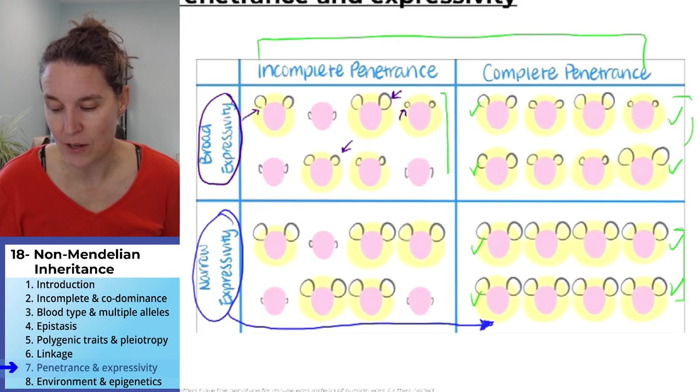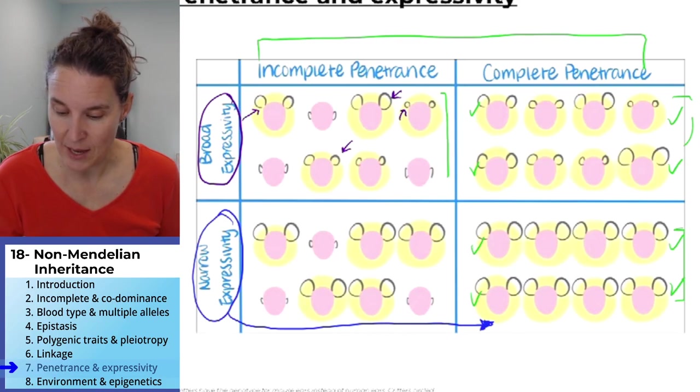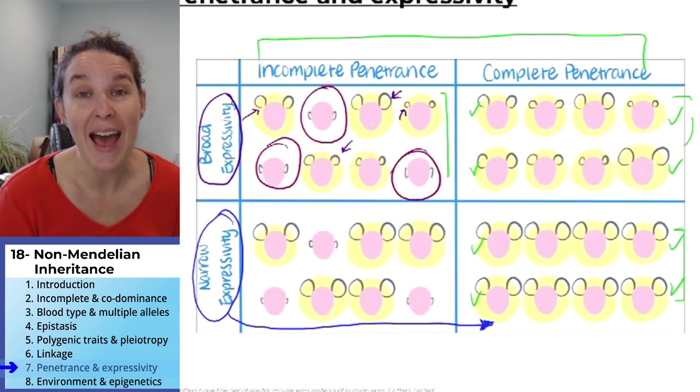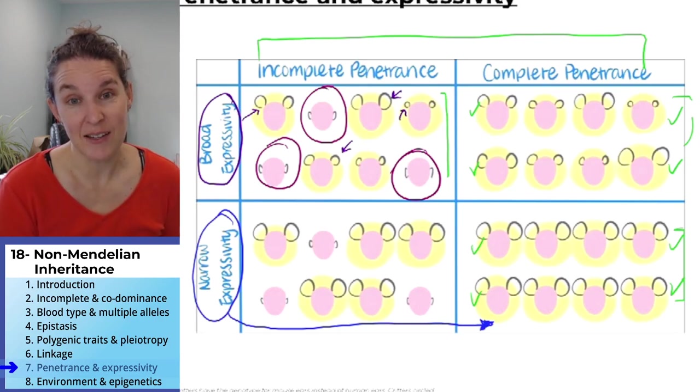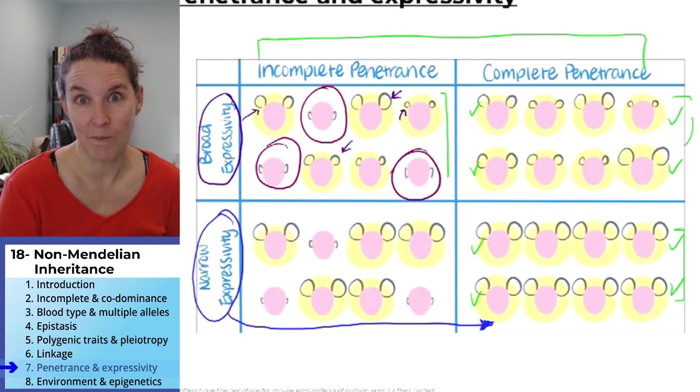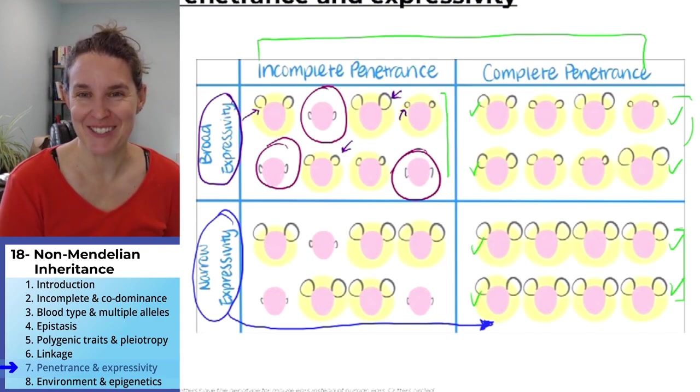However, you could have incomplete penetrance, in which case you have these kids. How'd they make it out without the mouse ears? They have the genotype, but they don't have the phenotype. Why? Because the trait has incomplete penetrance.